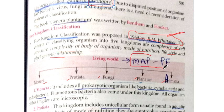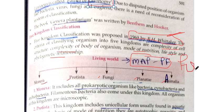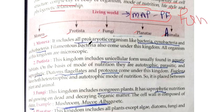The five kingdoms are Monera, Protista, Fungi, Plantae, and Animalia. A mnemonic to remember them is MAP FUN: M for Monera, A for Animalia, P for Plantae, P for Protista, and F for Fungi — MAP is a fun symbol trick to remember all five kingdoms.